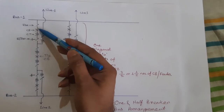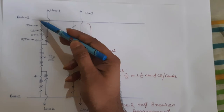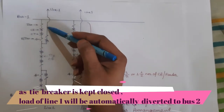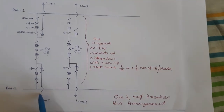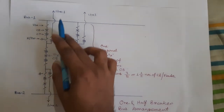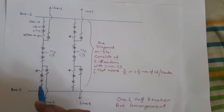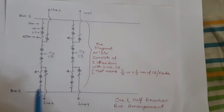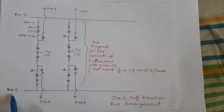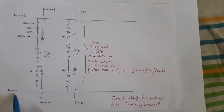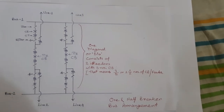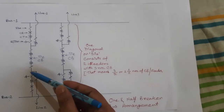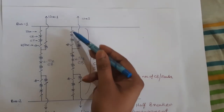Due to tripping of that circuit breaker, line 1 cannot take power through bus 1. But as the tie breaker is closed, the load of line 1 will automatically divert to bus 2. So load of both line 1 and line 2 will be fed through bus 2 during a fault in bus 1. Similarly, if a fault occurs in bus 2, all circuit breakers connected with bus 2 will trip to clear the fault. But there will be no power interruption in line 2 or line 4, because their load will automatically divert to bus 1 through the tie circuit breaker.